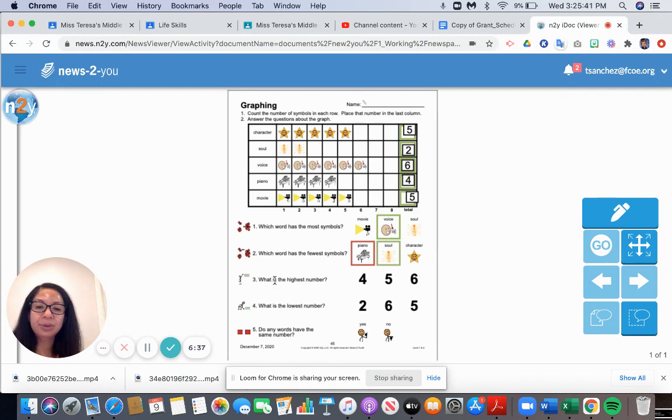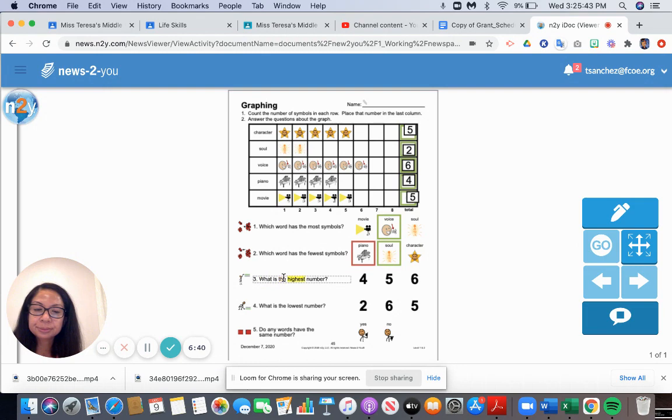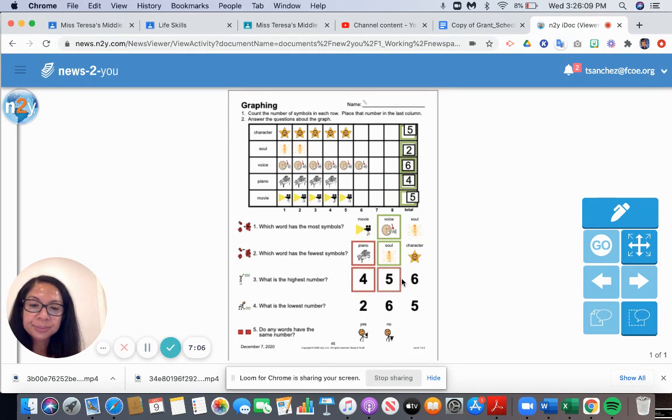Now number three: What is the highest number? Well, we know that voice has the most symbols, so I think that also has the highest number. We have five, two, six, four, or five. What's the highest number there? Is it four? No. Is it five? No. Is it six? Yes, six is the highest number.